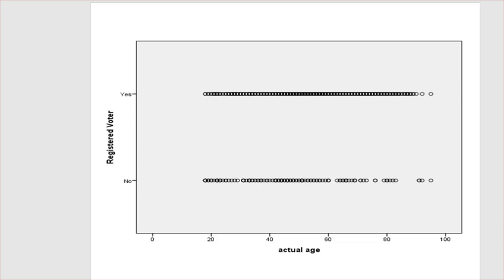And it doesn't look like a normal distribution. So it violates the assumption of normality for ordinary least-square regression. And we can clearly see the dichotomous nature of the dependent variable in this figure.